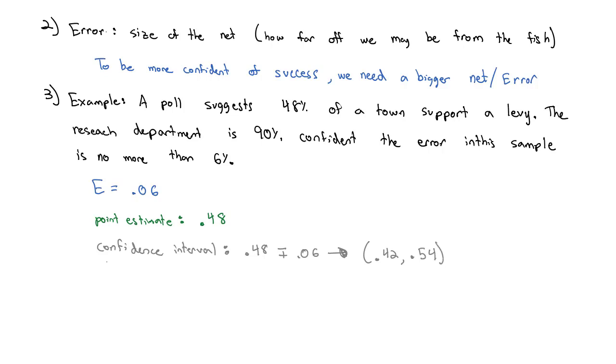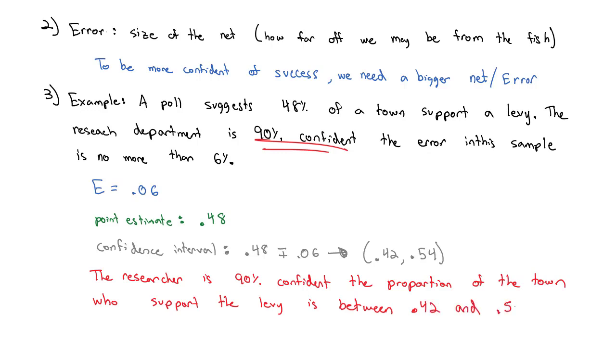And so the researcher can interpret this confidence interval by saying, the researcher is 90% confident. That confidence is the size of the net. A bigger net means you're more confident. We're 90% confident the proportion of the town who support the levy is between 0.42 and 0.54. Our sample was 48%, but for the entire town, it's probably 90% confident. It's probably between 0.42 and 0.54 for the entire town.